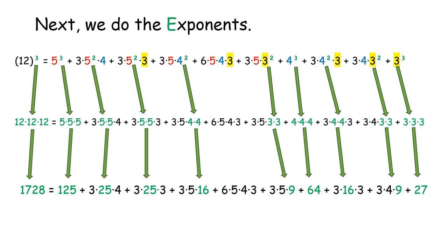5 squared again is 5 times 5, which is another 25. 4 squared is 4 times 4, which is 16. 3 squared is 3 times 3, which is 9. 4 cubed is 4 times 4 times 4, which equals 64.